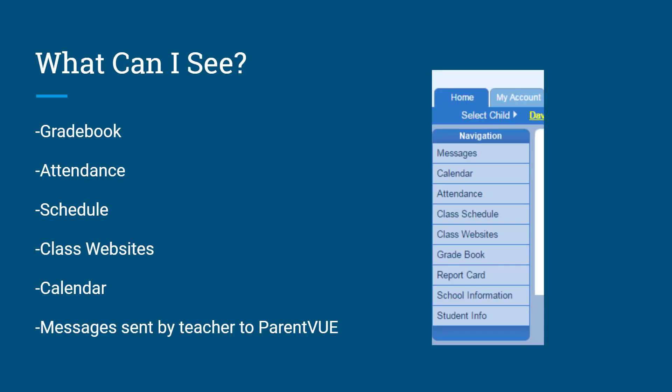So what can you see? You'll be able to see the gradebook with all of your grades, your attendance history to keep track of when you are out, and your class schedule. You'll also be able to see your class websites for each class, so you can easily track assignments and homework happening outside of class. You'll also have access to a calendar which keeps track of all assignments for all classes in one place. Finally, you can also keep track of messages sent to you by the teacher.